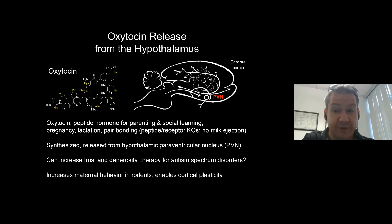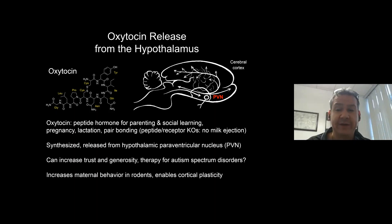One thing we do know about central effects of oxytocin — from the work of Stu Carter, Court Peterson, Larry Young, and Tom Insel — is that oxytocin infused into the brain can really turn on or enable a broad range of maternal behaviors in rodents. One of these is pup retrieval.